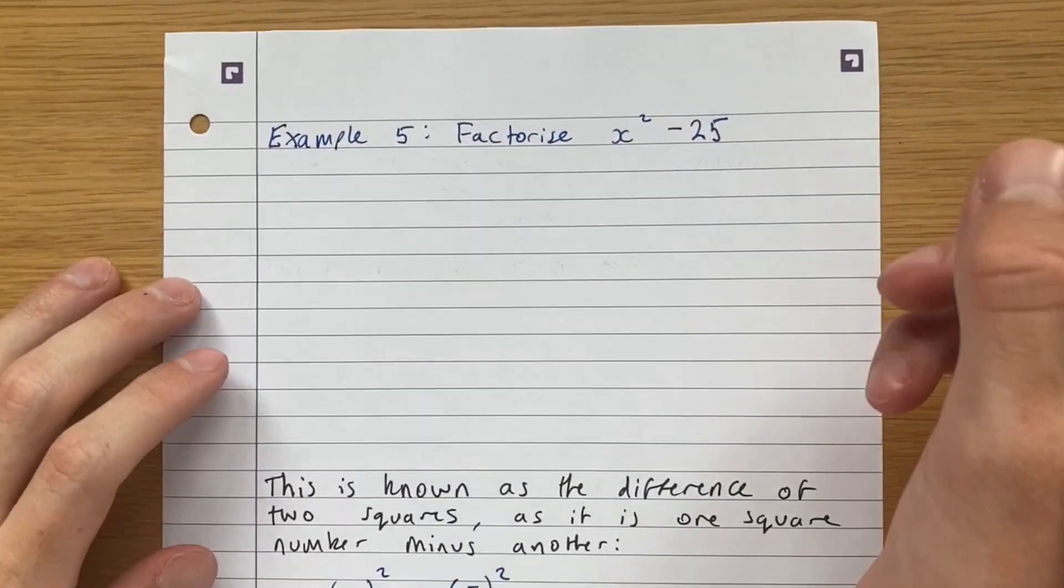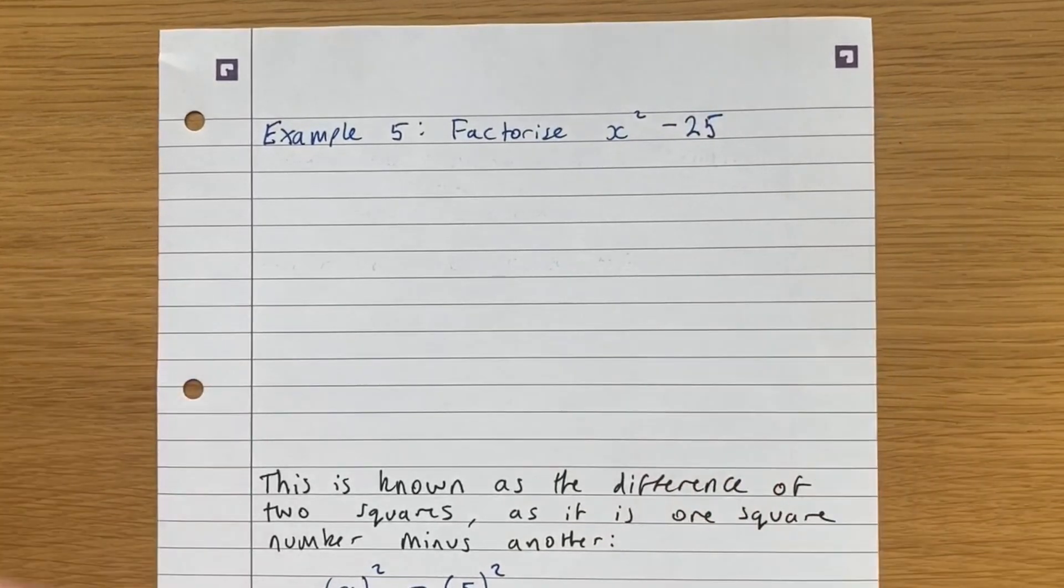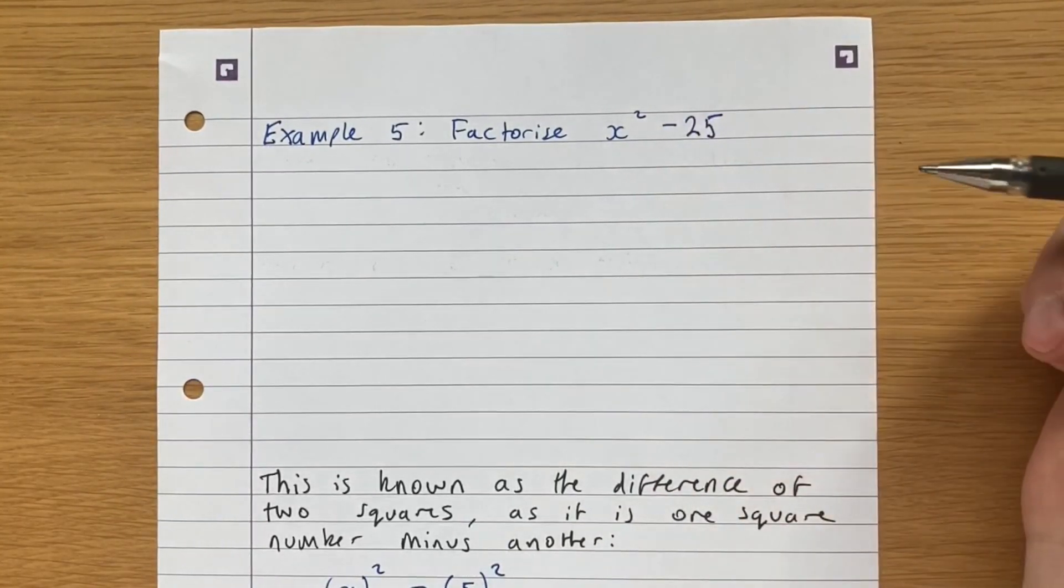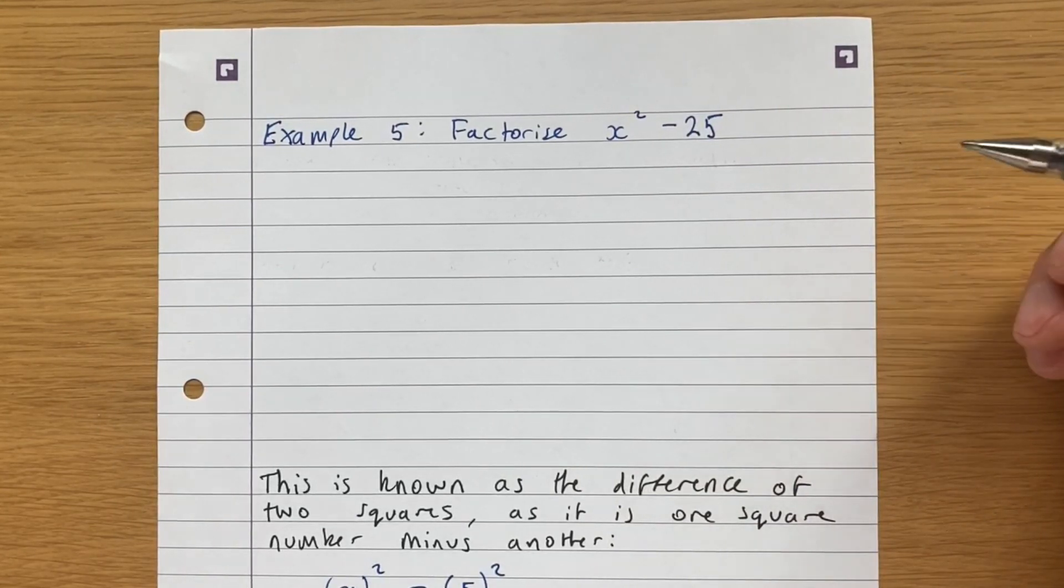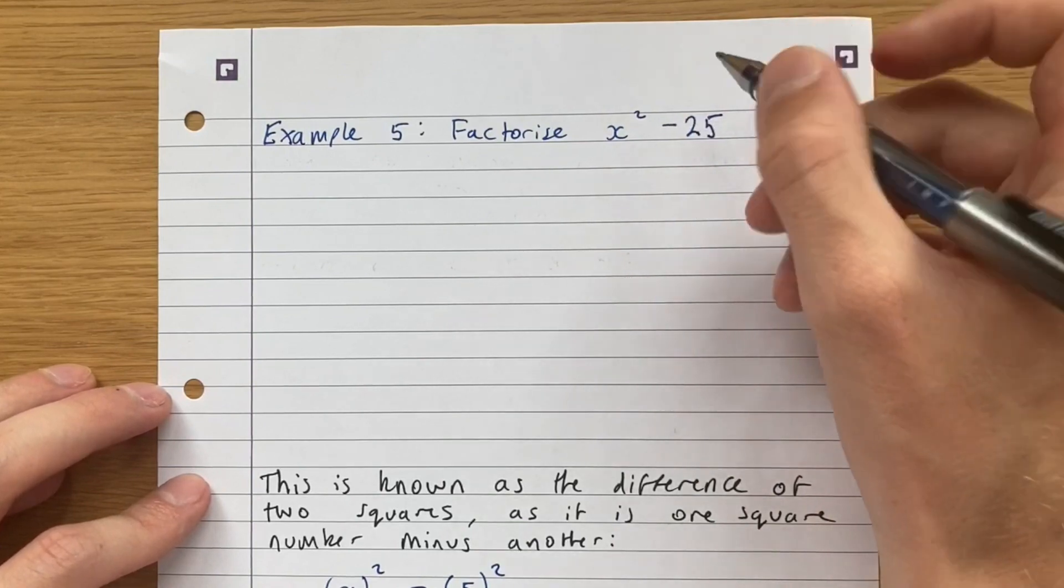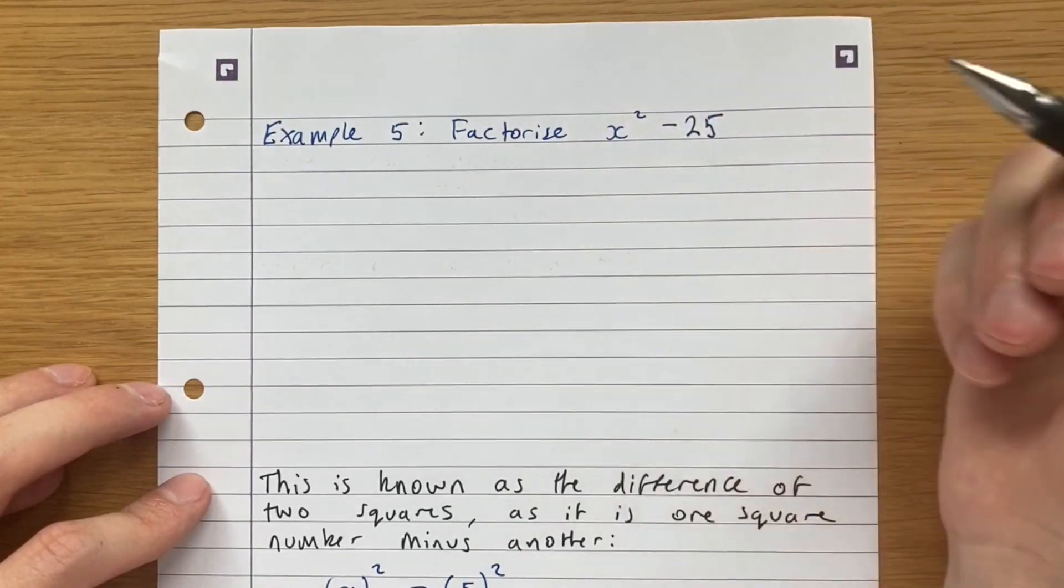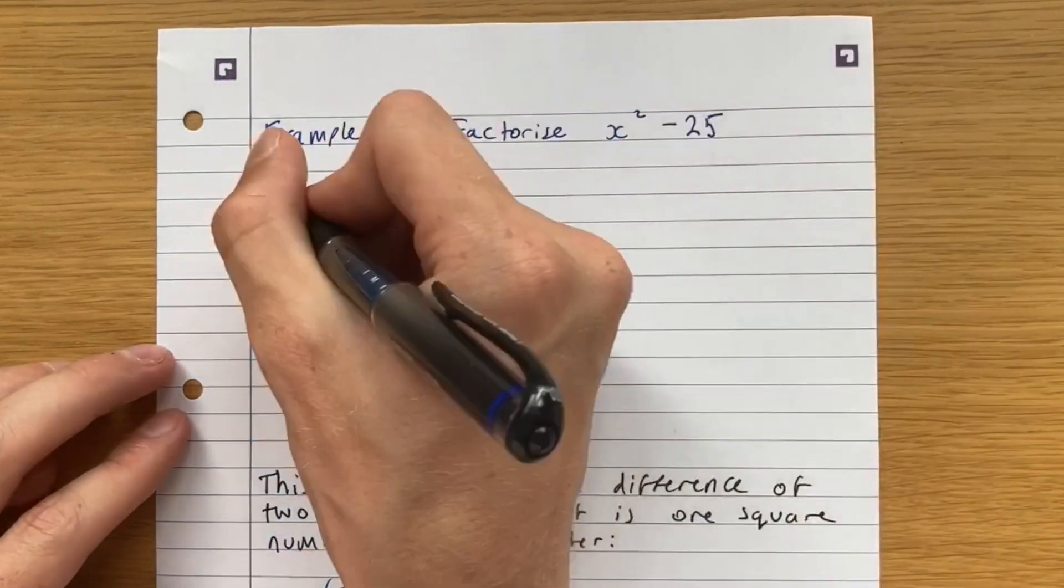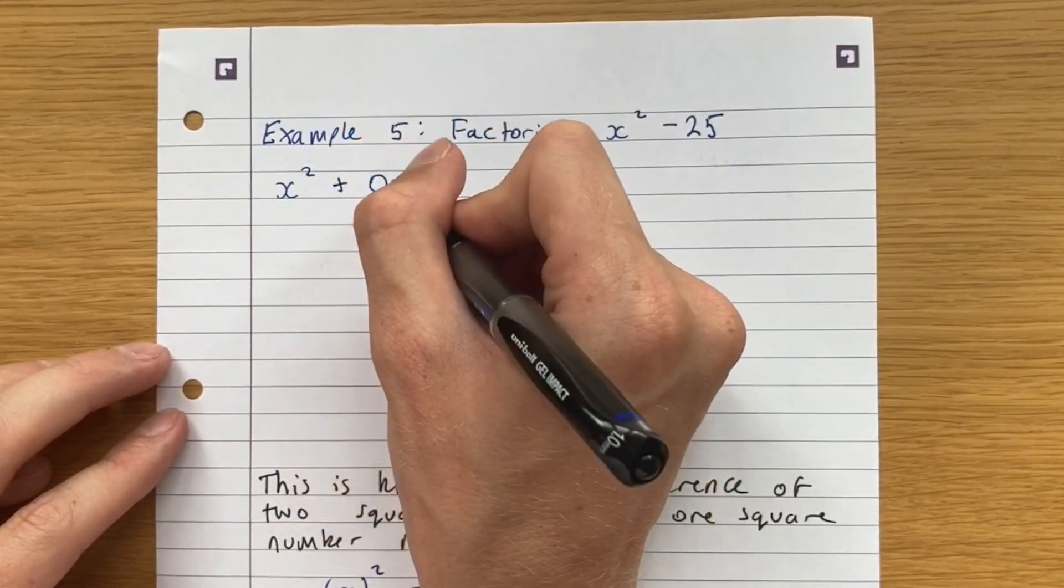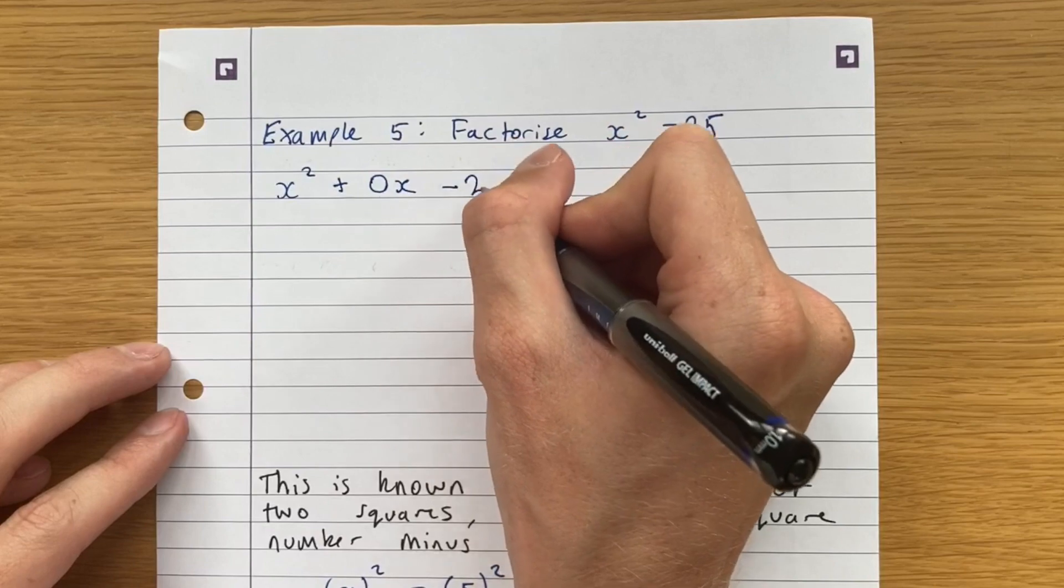Let's do another example. So we're asked to factorise x squared minus 25. Well, this one looks a bit different because we don't have a term with just an x after it. But it doesn't matter. We can still follow our same procedure. We want two numbers that multiply together to give us this number and add together to give us our number in front of the x, which in this case is 0. Because this can just be rewritten. x squared plus 0x minus 25.